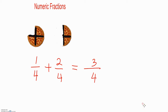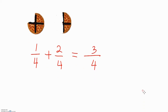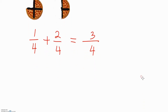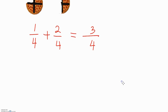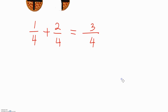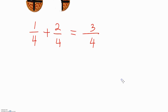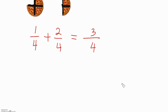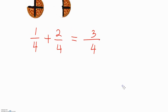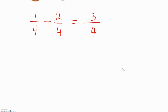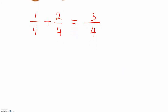What we did there is we just copy the common denominator and add or subtract the numerators. In this case we added the numerators: one and two gives us three. So what about if we have different denominators — what shall we do?